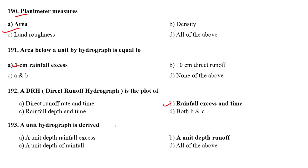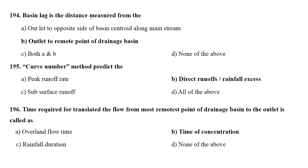A unit hydrograph is derived from a unit depth runoff. Basin lag is the distance measured from outlet to remote point of drainage basin. Curve number method predicts the direct runoff or rainfall excess.